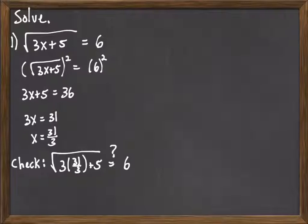So here we'd have 3 times 31 over 3, the 3s would cancel. We get 31 plus 5, which would be square root of 36. Square root of 36 is equal to 6. And so that is an answer to the equation, x equals 31 thirds.